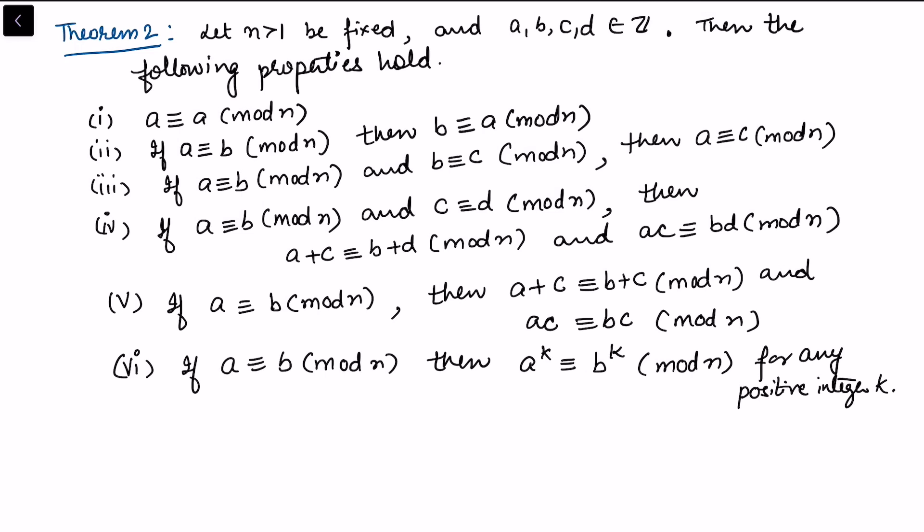Theorem 2 says: let n be greater than 1 be fixed and let a, b, c, d belong to integers. Then the following properties hold. First, a is congruent to a modulo n. Second, if a is congruent to b modulo n then b is congruent to a modulo n. Third, if a is congruent to b and b is congruent to c then a is also congruent to c modulo n.